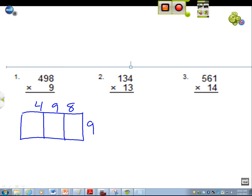First you would make your box if you're doing lattice. So you would draw the line. And then you would do 8 times 9, that would be 72.